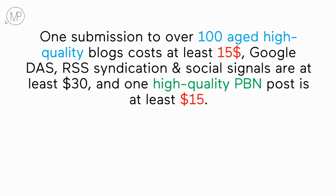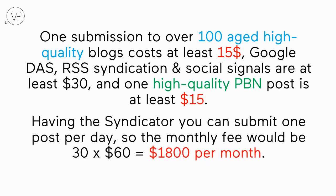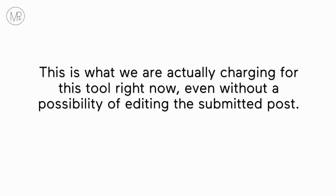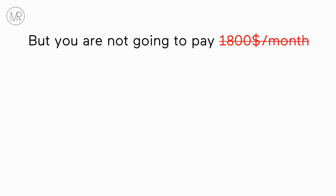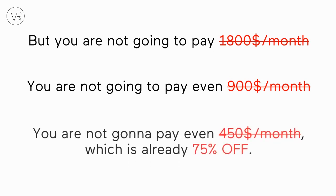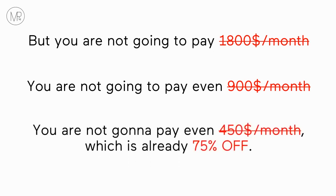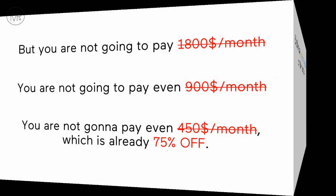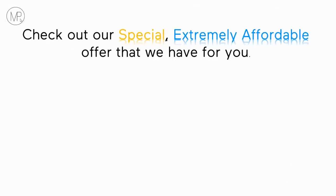One submission to over 100 high-quality blogs costs at least $15. Google DAS, RSS syndication, and social signals are at least $30, and one high-quality PBN post is at least $15. Having this syndicator and submitting one video per day, the monthly value would be $1,800 per month — which is what we're actually charging right now. But you are not going to pay $1,800, not $900, not even $450 per month, which is already 75% off. Check out our special, extremely affordable offer available today.